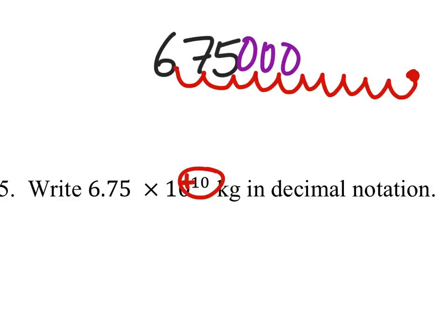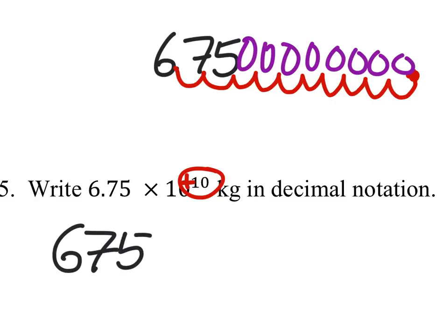So I've got 1, 2, 3, 4, 5, 6, 7, 8 zeros. So I could just write my answer as 6, 7, 5, 0, 0, 0, 0, 0, 0, 0, 0.